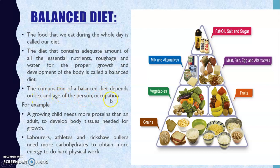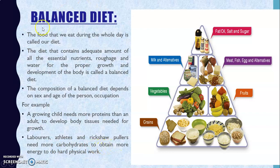The composition of the balanced diet depends upon the sex, age, and occupation of the person. If the child is growing or is an infant, they need a lot of proteins so that their body can build new tissues. For people doing hard physical work, a lot of carbohydrates and fats are needed as these are the energy-giving foods.